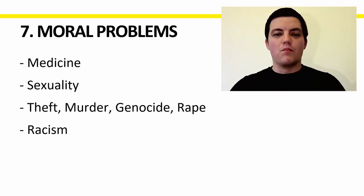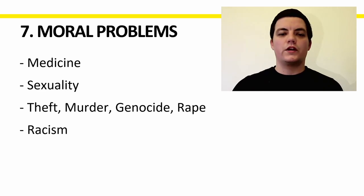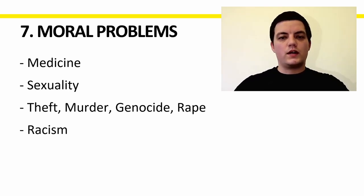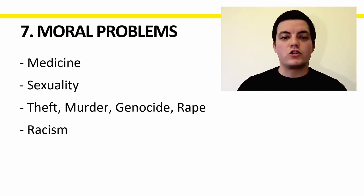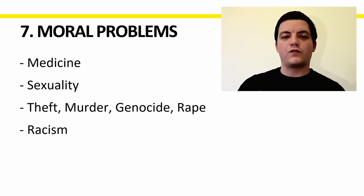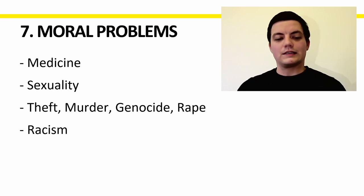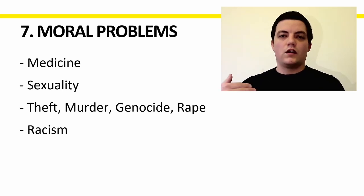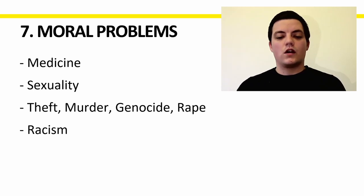The seventh reason is moral problems. From medicine: should we treat hereditary diseases if they might slow down human evolution? There's a problem around sexuality — multiple genders and homosexuality cannot reproduce, so why would they evolve if evolution is true? I once asked this to an evolutionist, and he said evolution must realize we're overpopulated. So I asked: is evolution therefore ensuring that the least fit among us cannot reproduce? And he kind of walked into that one. We also have questions around theft, murder, genocide, and rape — are these okay in an evolutionary system where it's survival of the fittest?